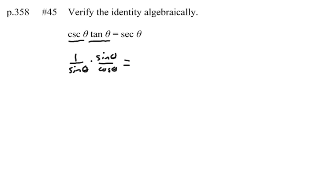Well, if I look at multiplying these two fractions, I can see that sine over sine will cancel out. So this is equal to 1 over the cosine of theta.